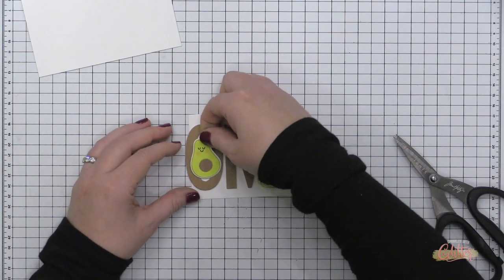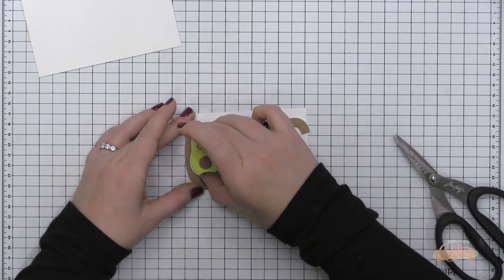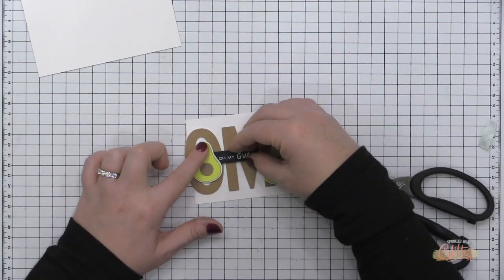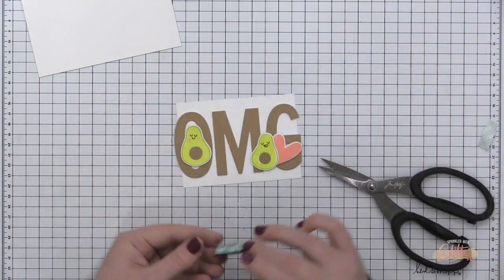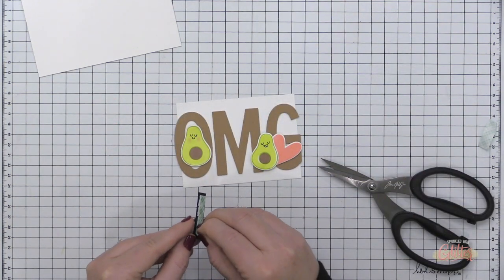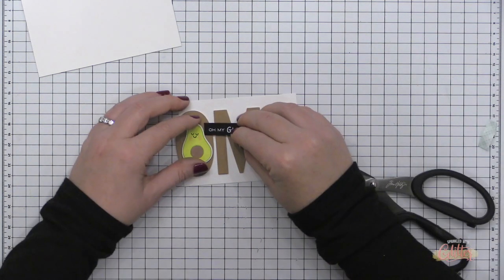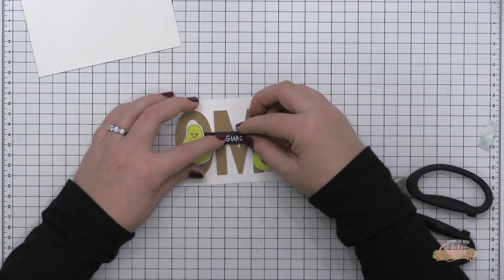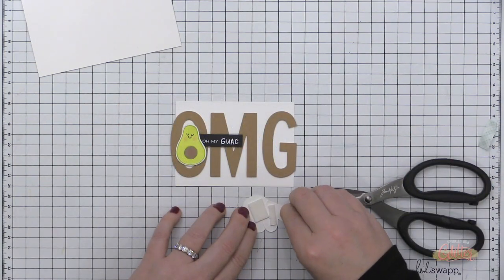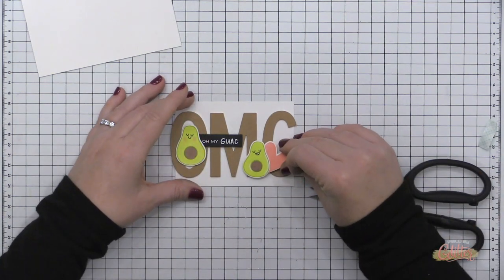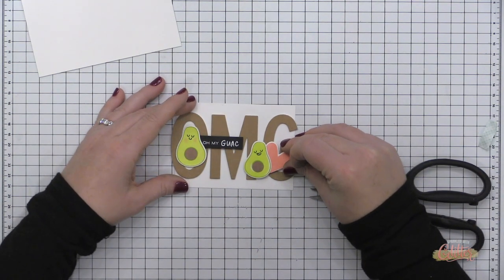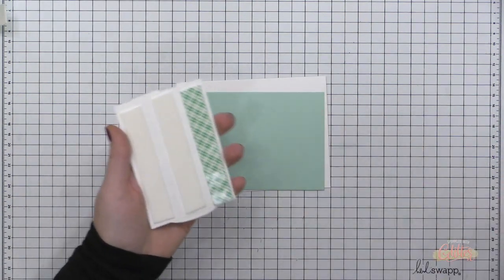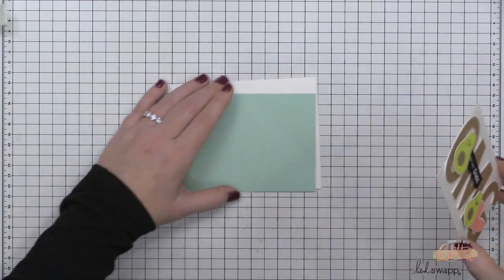So I have the larger avocado that I'm adhering kind of in the center of this O using some foam adhesive. Once I get him placed into the center of the O, he is cocked off to the side just a little bit. I'm going to add my oh my guac sentiment strip using some foam adhesive kind of tucked behind him, and then I will add my little grouping of the heart and the smaller avocado once again using some foam adhesive. Because I like big cards and I cannot lie, so you can always decrease the amount of dimension but I tend to hand deliver a lot of cards or send them in a bubble mailer so the dimension doesn't bother me.